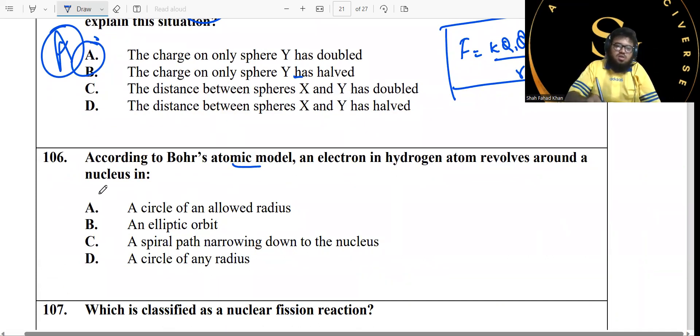According to Bohr's atomic model, a circle of an allowed radius is provided to an electron.